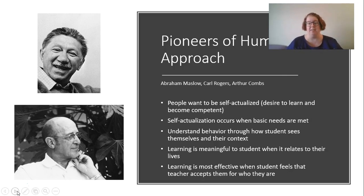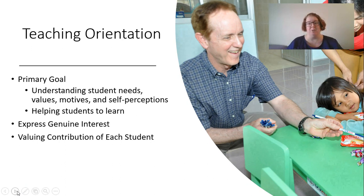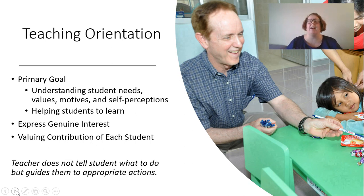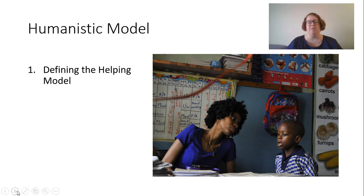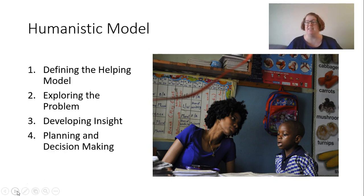In the humanistic teaching orientation, our primary goal is to understand students' needs, values, motives, and self-perceptions to help them learn. We express genuine interest in students and value every student's contribution to our classroom. We don't tell students what to do but guide them toward appropriate action. Using a helping model, we explore the problem with the student, help them develop insight into what might be causing the problem, help them plan and make a decision about what could change, and then integrate that into the current situation.